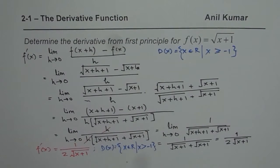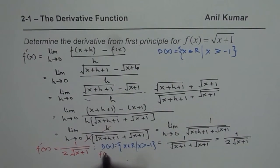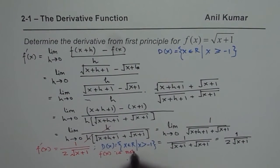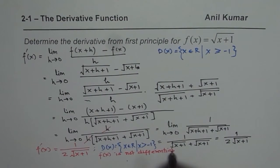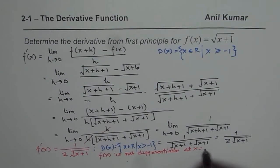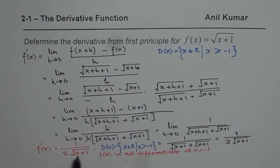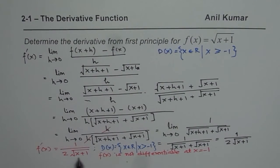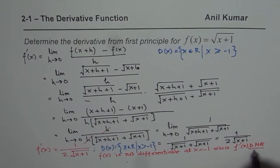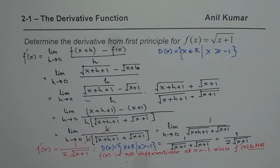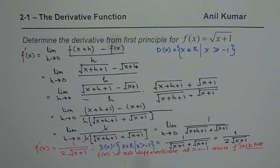So f(x) is not differentiable at x equals minus 1, since f'(x) does not exist there — the denominator becomes 0. Using this general principle, we can identify points where the function is not differentiable. I hope that helps, thank you and all the best.